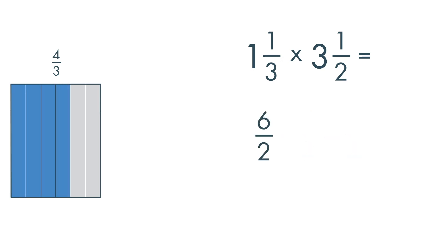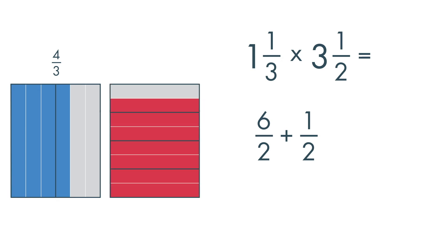Three and one-half can be renamed as six-halves plus one-half. Six-halves plus one-half is equal to seven-halves.